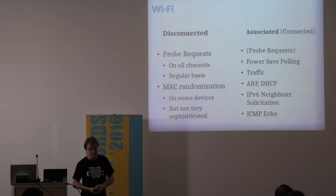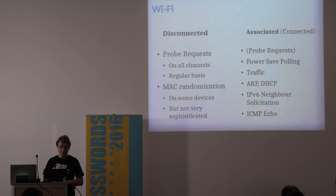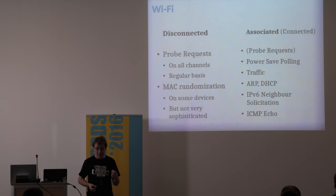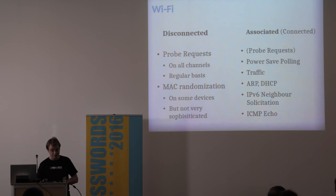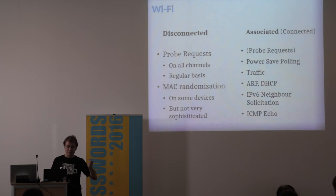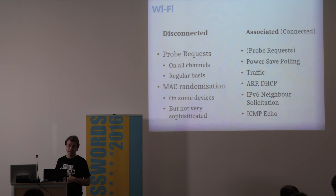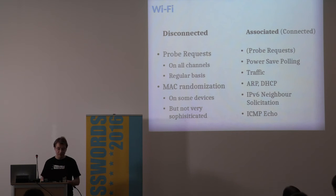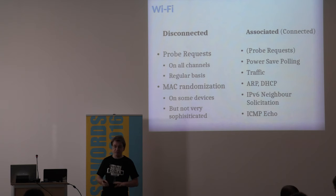Because some people were using probe requests for tracking devices, Apple started MAC randomization — during probe requests, the phone does not use its real MAC address but a randomly generated one. However, it has been shown that this scheme is very weak. On some devices, the MAC randomization uses the random MAC in the header but the real MAC address in the option headers. Also, they just keep incrementing the sequence number without resetting it between randomization steps. And it's only randomized when the phone is on sleep or the screen is off and it's not connected.